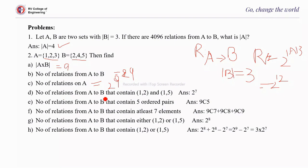Find the number of relations from A to B that contain (1,2) and (1,5). Since these 2 elements must be present, there are 9 − 2 = 7 remaining elements each with 2 choices. The 2 fixed elements each have only 1 choice. So the answer is 2^7 × 1^2 = 2^7.